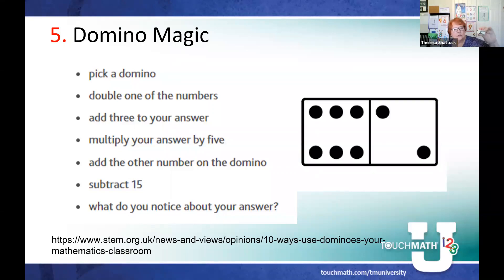Let me use mine as the example. I have a six-two here. I'm going to double one of the numbers - I'll double the six, so that's twelve. I'm going to add three, that makes it fifteen. I'm going to multiply fifteen by five, and that is seventy-five. Now I'm going to add the two, so that's seventy-seven. And I'm going to subtract fifteen. That's sixty-two. What do you notice about the answer and my domino? It's the same - it's sixty-two.